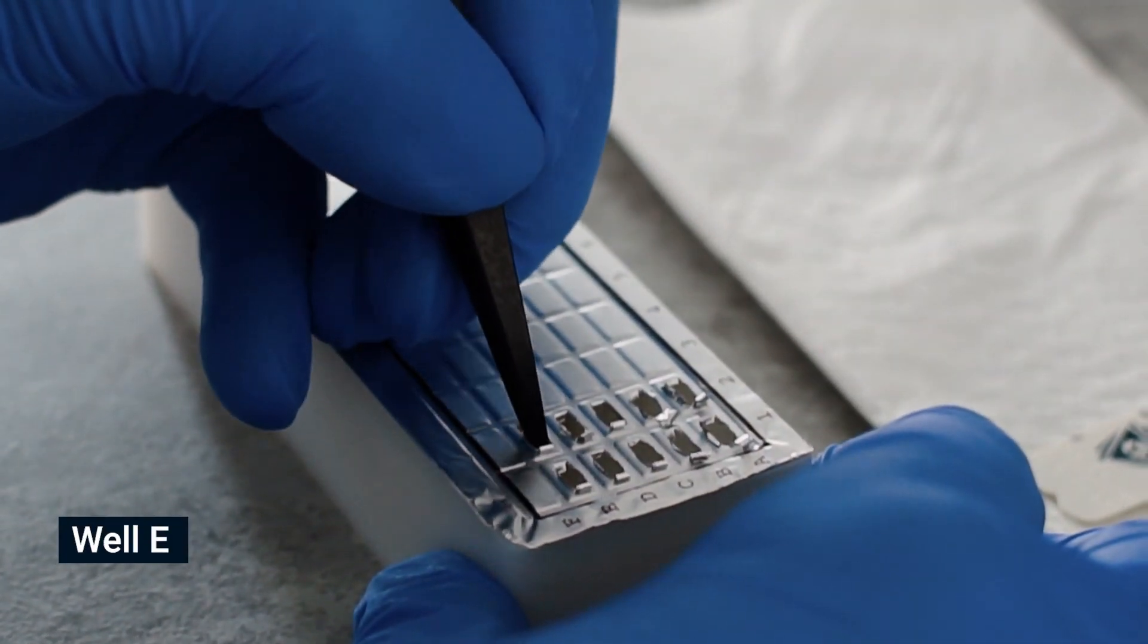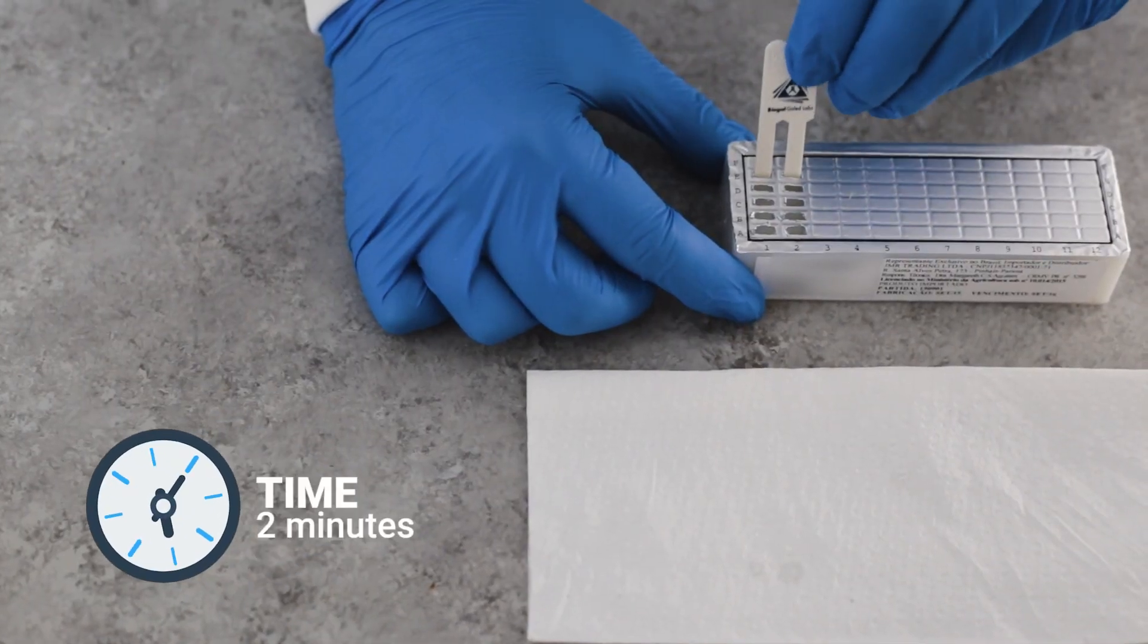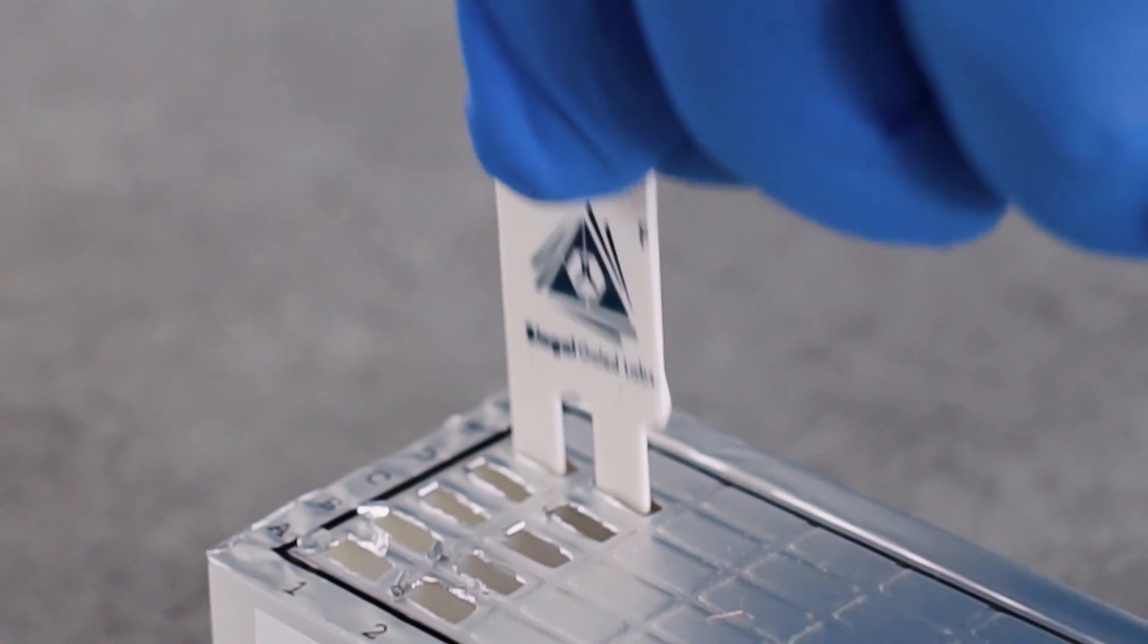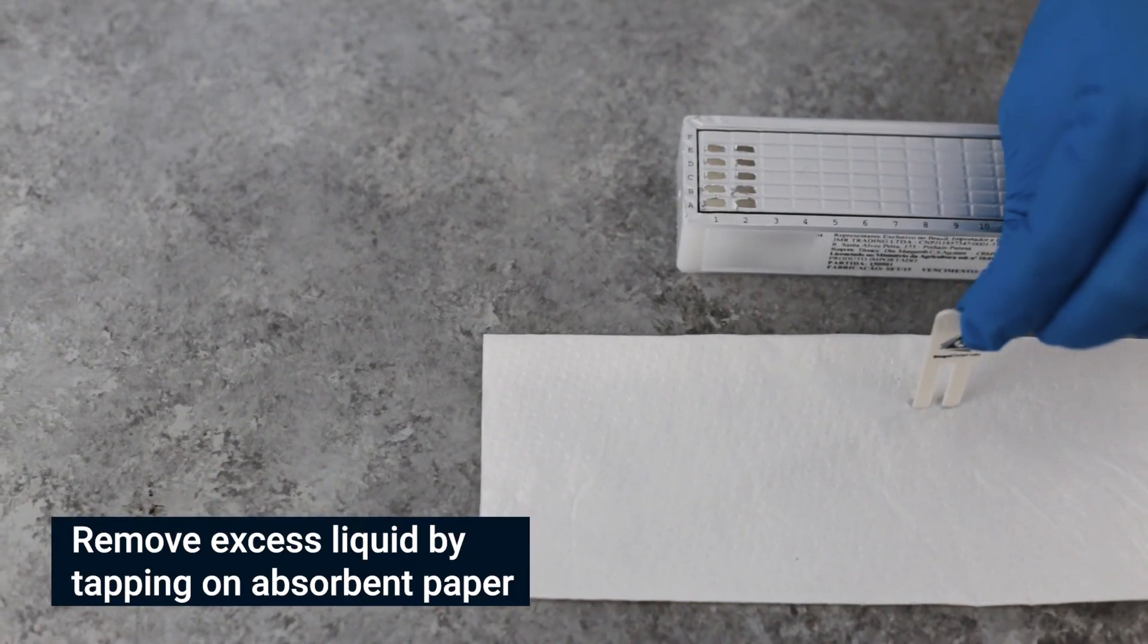Pierce the foil of the next wells in row E. Shake off excess liquid and insert the comb for 2 minutes. Move the teeth at least twice during this step. Remove excess liquid.